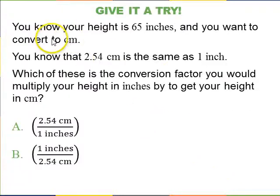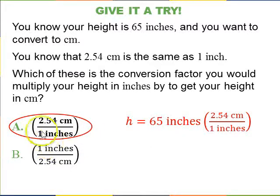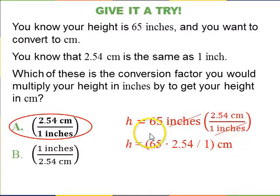So once again, let's give it a try. You know your height is 65 inches, and you want to convert this to centimeters. You also know that 2.54 centimeters is equal to 1 inch. So you're going to multiply 65 inches by a conversion factor equal to 1. And so it could either be A or B. A is 2.54 over 1, and B is 1 over 2.54. Please pause the video, think about which one you would use, and then resume. So hopefully you answered A. You want it to have inches on the bottom. And the reason for that, the equation looks like this. 65 inches multiplied by, if you take 2.54 centimeters divided by inches, the inches cancel, and you just end up with centimeters. And in your calculator, you type 65 times 2.54 divided by 1. And you just get 165 centimeters, and that seems to make sense.